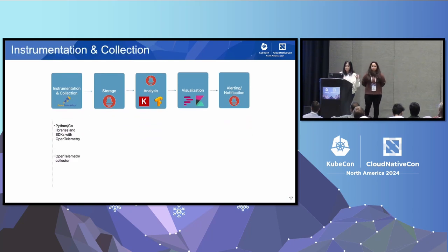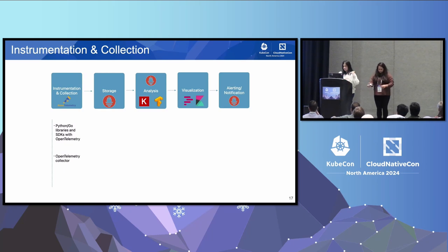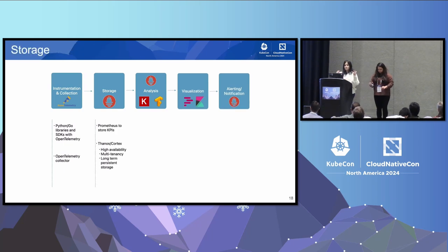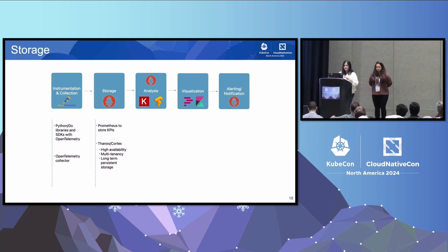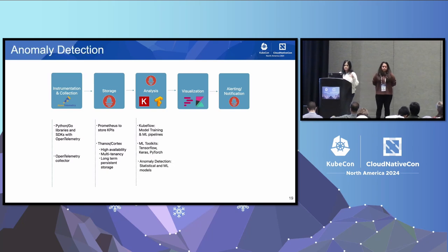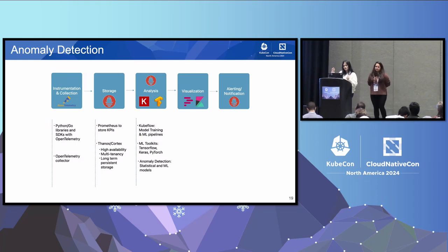For instrumentation and collection, there are open source libraries like OpenTelemetry that can be used with SDKs in Python and Go to instrument your service and collect the KPIs you care about. For storage, you want to store these KPIs to monitor them. You can use storage solutions like Prometheus, Thanos, or Cortex, which provide high availability, multi-tenancy, and long-term persistent storage. For analysis, there are libraries across multiple languages for both statistical and machine learning anomaly detection, such as TensorFlow and scikit-learn.